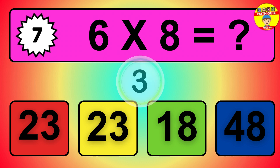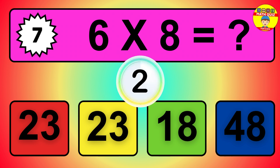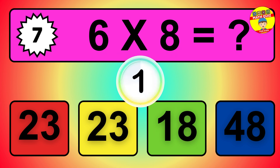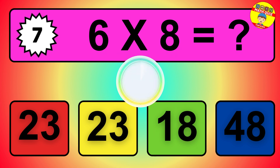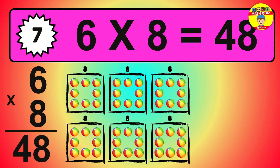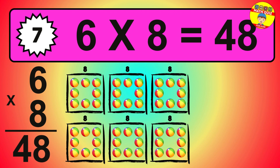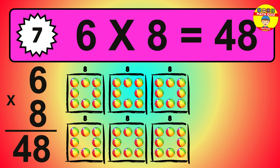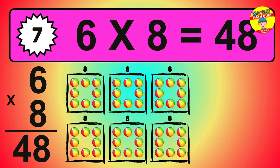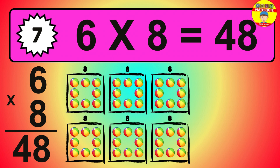Question 7. 6 times 8 equals what? The answer is 6 times 8 is 48. To calculate, we have 6 groups with 8 balls each one. So how many balls do we have? 48 balls.